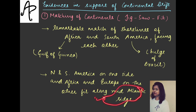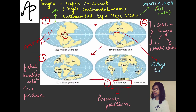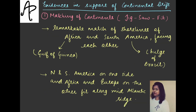Another thing: North and South America on one side and Africa and Europe on the other — they fit along the mid-Atlantic ridge. If you see North and South America and then Europe and Africa, they also seem to be fitting with each other. The Atlantic Ocean is in between. So along the mid-Atlantic ridge it seems they separated. This is one of the major evidences suggesting it is possible that the continents had that matching scenario and were together at one point of time.